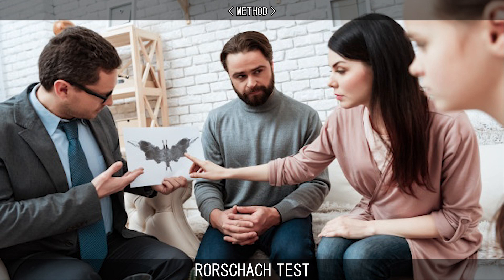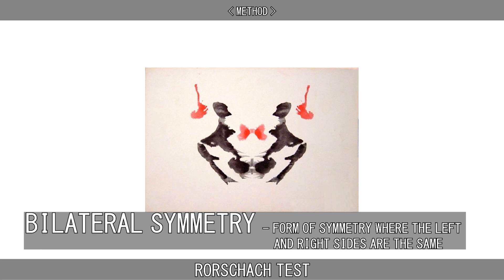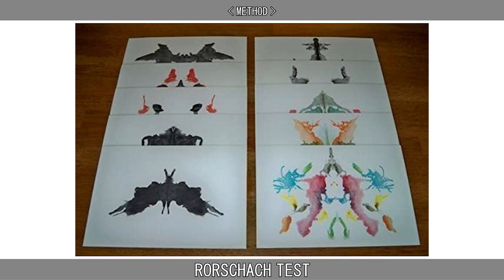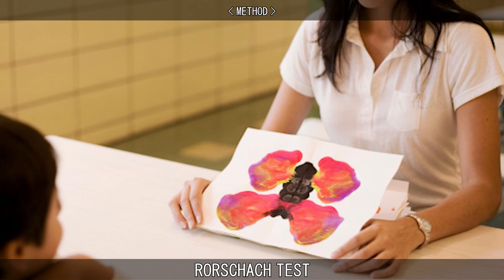There are ten official inkblots. Each of the blots has near-perfect bilateral symmetry. Five of the inkblots are black, two are black and red, and three are multi-coloured, all on a white background. The inkblots are not random or chance designs. Each of the blots selected by Rorschach had been meticulously designed to be as ambiguous and conflicting as possible.